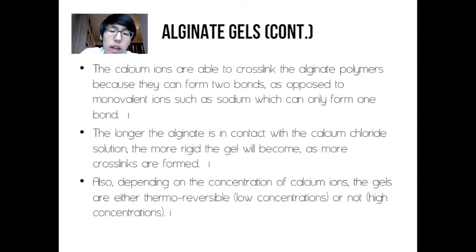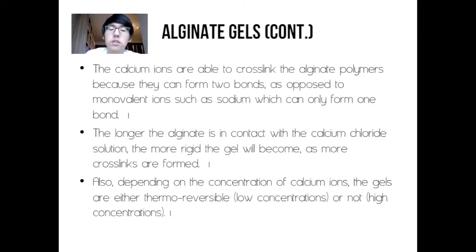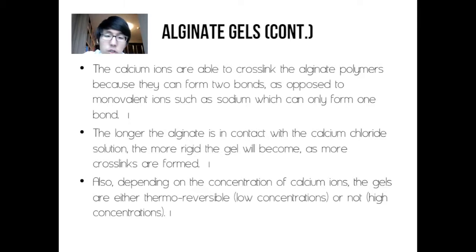The longer the alginate is in contact with a calcium chloride solution, the more rigid the gel will become as more crosslinks are formed. Also, depending on the concentration of calcium ions, the gels are either thermoreversible, which means low concentrations, or not thermoreversible at high concentrations.